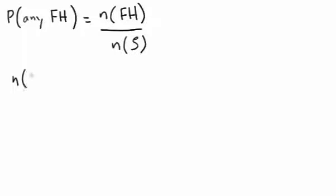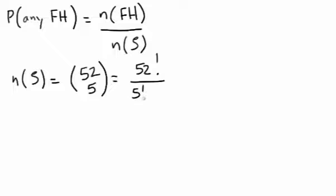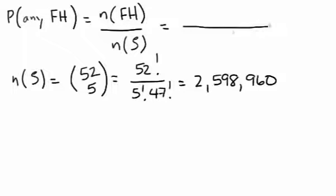Now the number of elements in the sample space is there are 52 cards in a standard deck, choose five. We're interested in choosing any five. So it's 52 choose 5, which is 52 factorial divided by 5 factorial divided by 47 factorial, which is 2,598,960. So we'll put that in our denominator, 2,598,960.